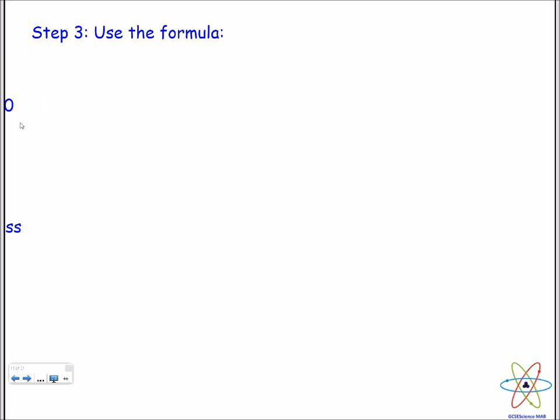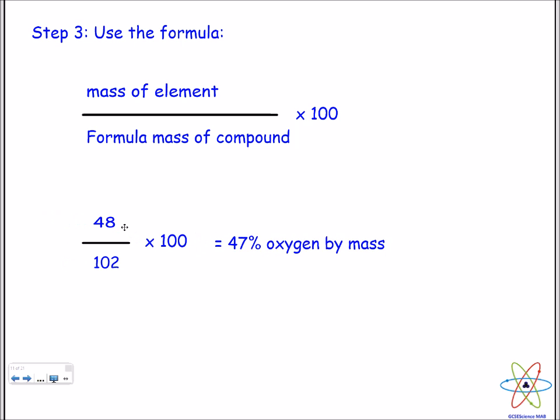We then put our values into this equation: mass of element over formula mass of compound multiplied by 100 to convert it to a percentage. So we've got 48 for oxygen and 102 as the formula mass, multiplied by 100. This gives us 47 percent oxygen by mass.